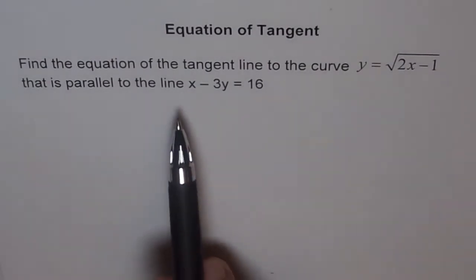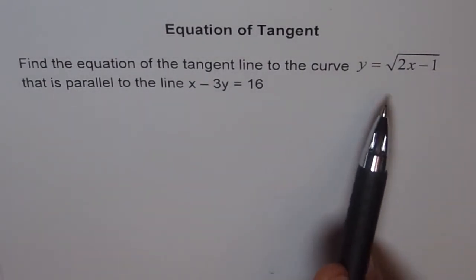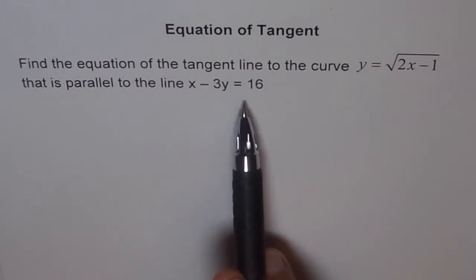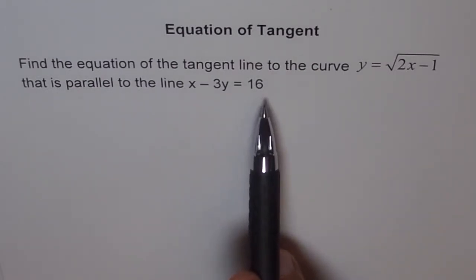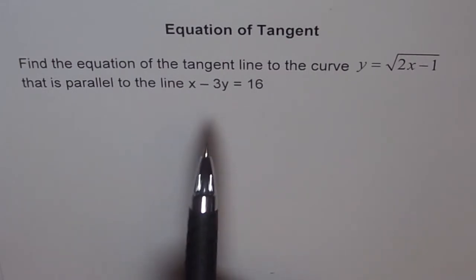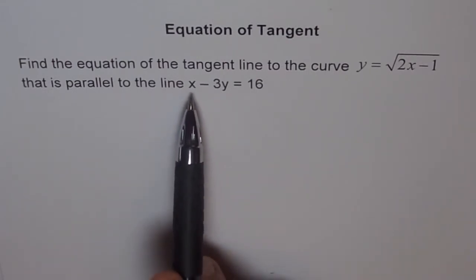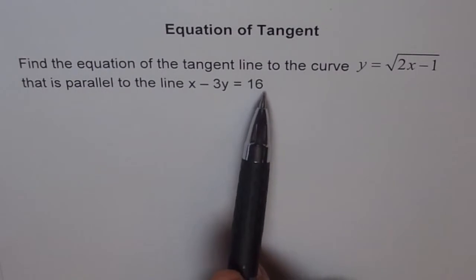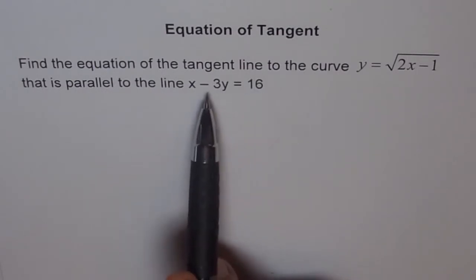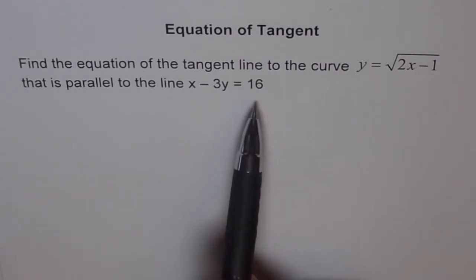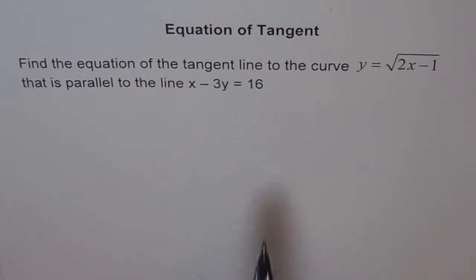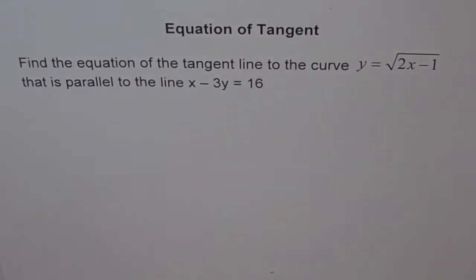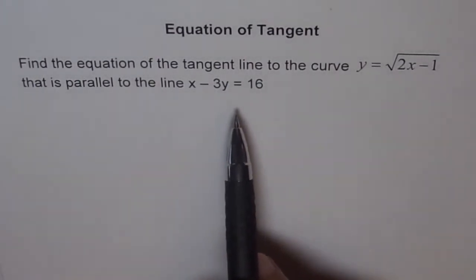If the tangent is parallel to this line, then the slope of the tangent should match. We can reorganize the line into y equals mx plus b form and find the slope. Taking x to the other side and dividing by minus 3, we get 1 over 3 as the slope. So the slope should be 1 over 3.